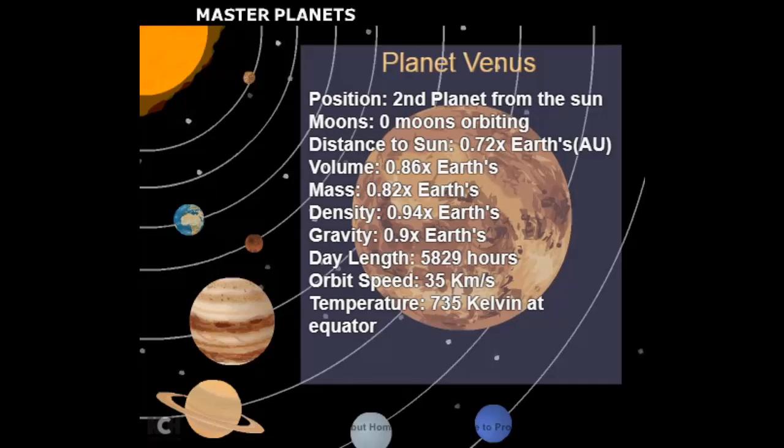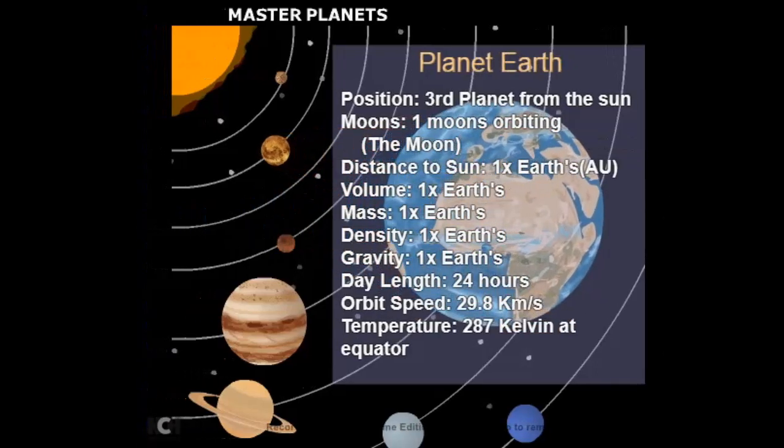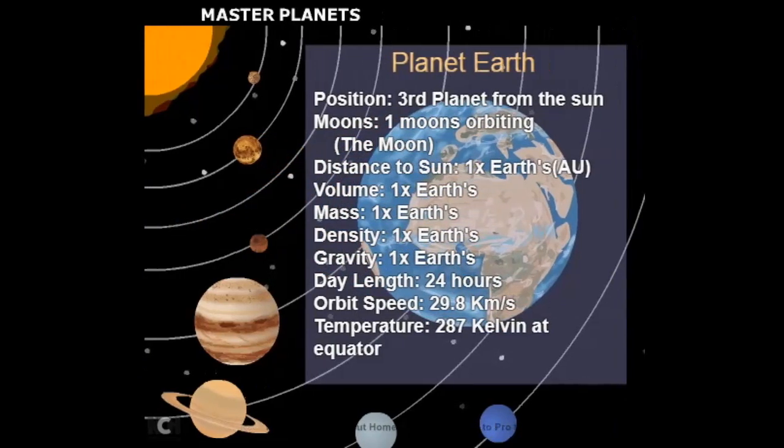The most obvious difference between the terrestrial and the Jovian planets is their size. The largest terrestrial planets, Earth and Venus, have diameters only one-fourth as great as the diameter of the smallest Jovian planet, Neptune.